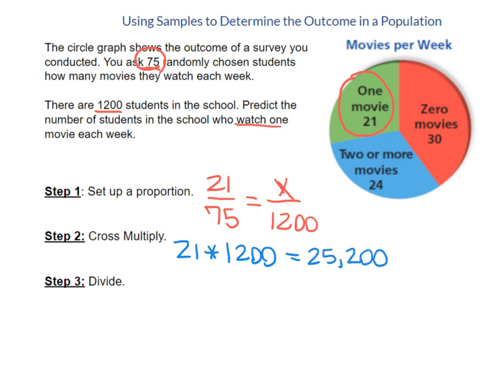The last step will be just to divide. And what we're going to divide by is that number we haven't multiplied by yet, the 75. So I'm going to take 25,200 and divide by 75. And I get 336.